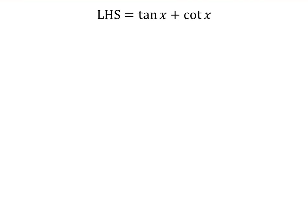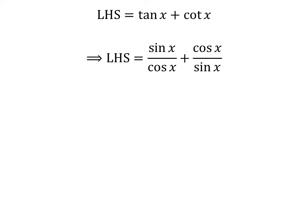The left hand side of the identity is equal to tangent of x plus cotangent of x. We know tangent of x is equal to sin of x upon cosine of x, and cotangent of x is equal to cosine of x upon sin of x. So here I have applied these identities.